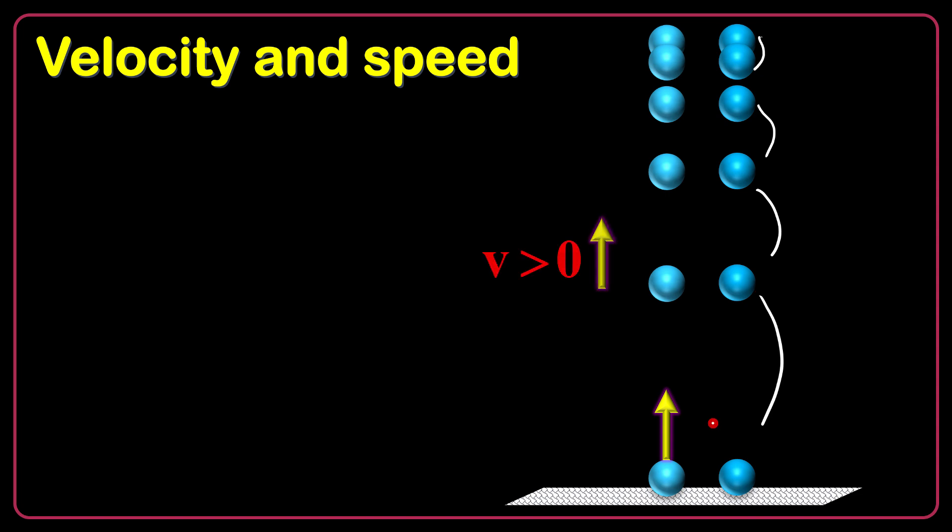Anyway, the velocity when the object is going up is positive. When the object is going down is negative. But you should know that the speed is not going to be negative ever and ever.